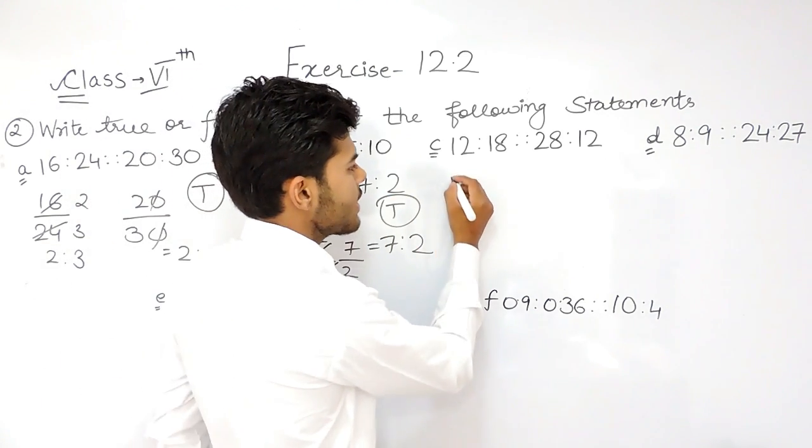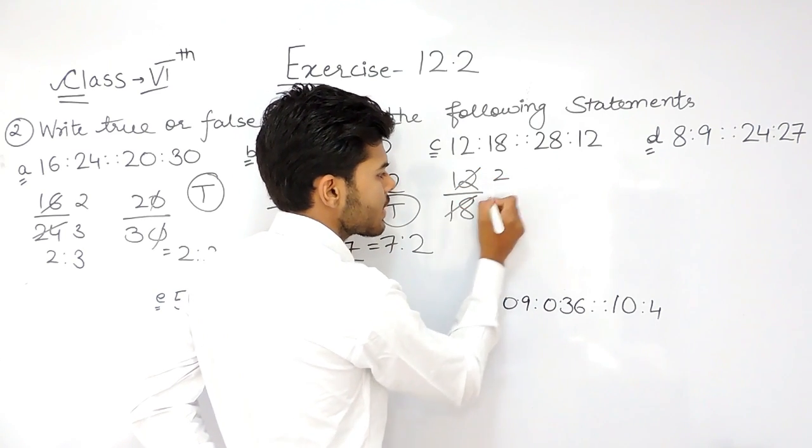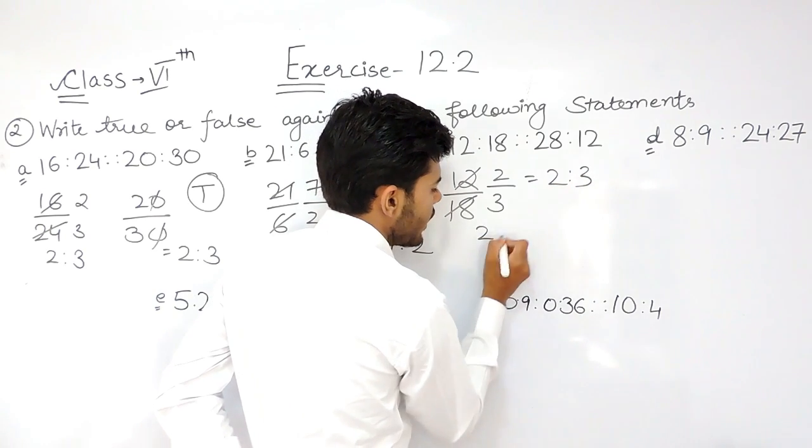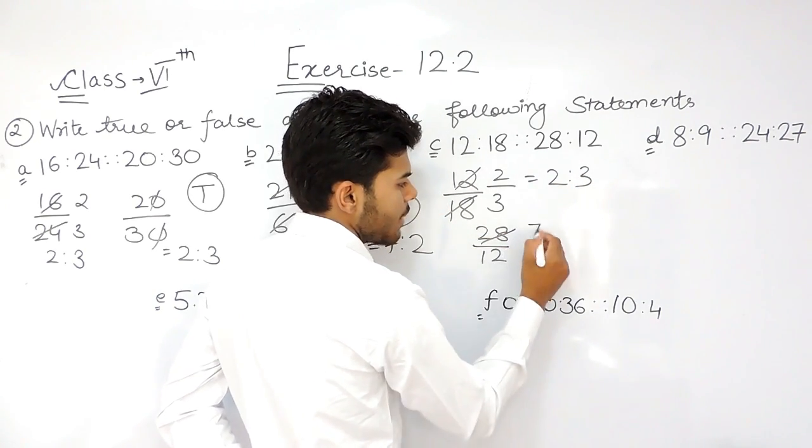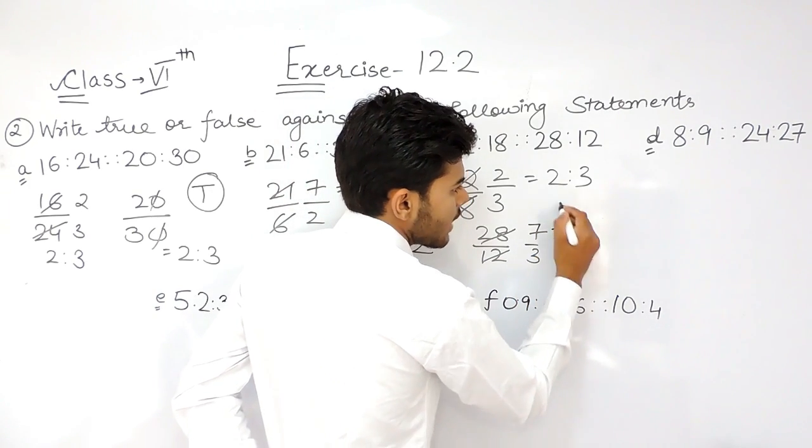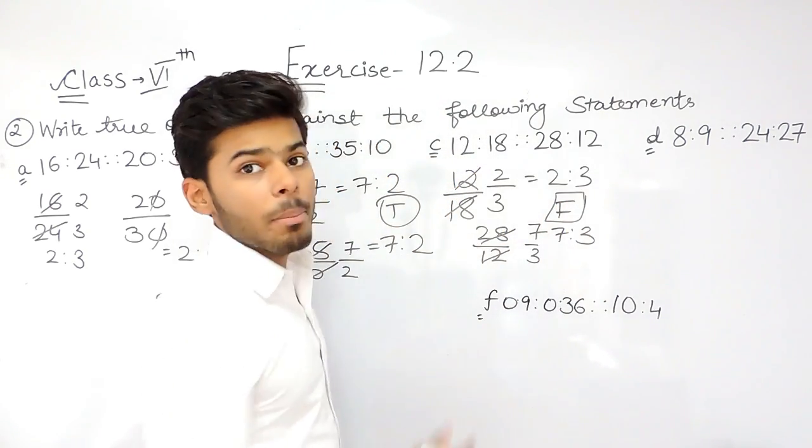Now this one, it is 12 ratio 18: 2 times 6 is 12, 3 times 6 is 18, so this is 2 ratio 3. And 28 upon 12: 7 times 4 is 28, 3 times 4 is 12. So this is 7 ratio 3. That means this statement is false. They are not in proportion.